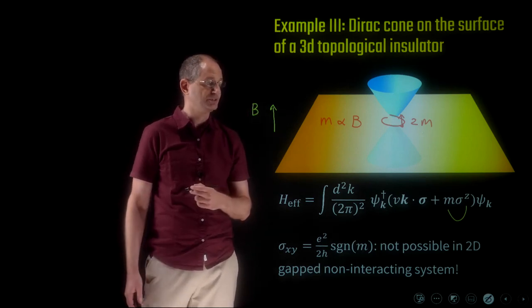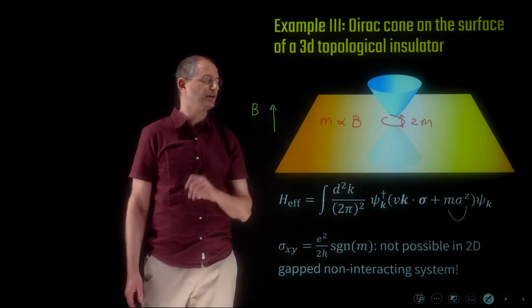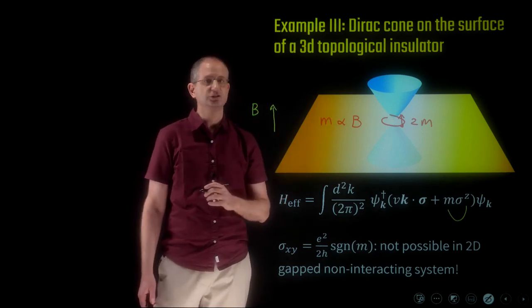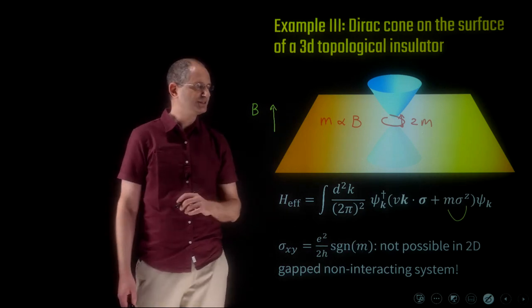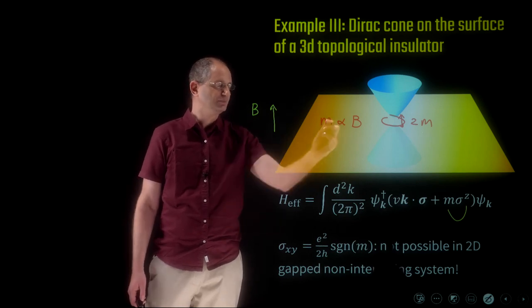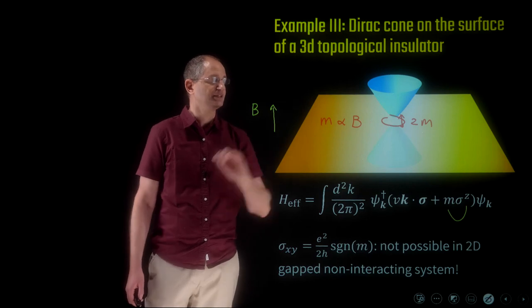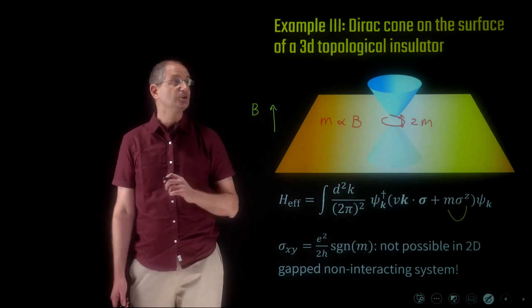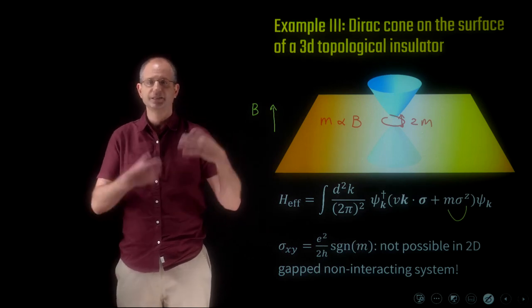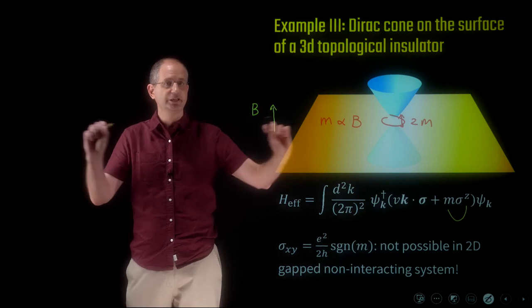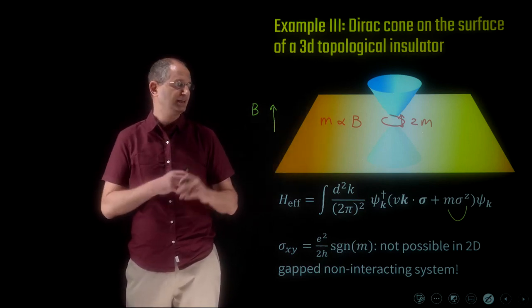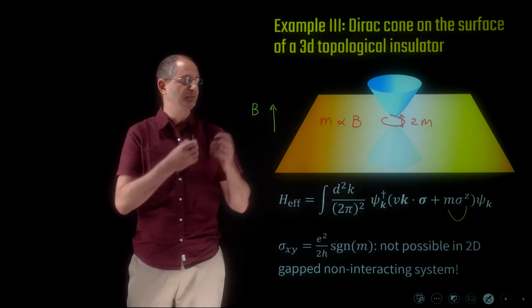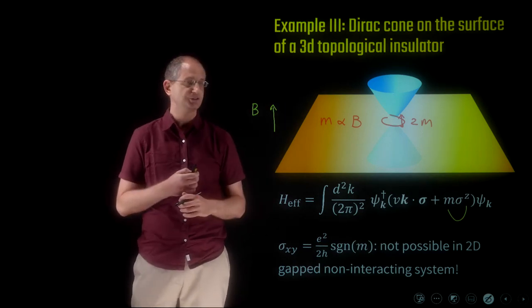Since the Hall conductivity in a two-dimensional gapped system of non-interacting electrons must be an integer times e²/h, a value of e²/2h is impossible. We've reached a contradiction: a two-dimensional, time-reversal-symmetric system cannot have a single Dirac point. There must be another Dirac point somewhere in the Brillouin zone, unless our 2D system is actually a surface of a higher-dimensional — in this case three-dimensional — topological insulator. This demonstrates that this surface state is indeed anomalous. In summary, we discussed the general concept of an anomalous edge state: a low-energy edge theory that cannot appear in the same dimension with the same symmetry class in a standalone (d−1)-dimensional system, but can only appear as the surface of a higher-dimensional topological phase.